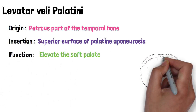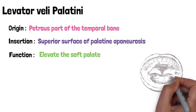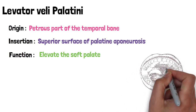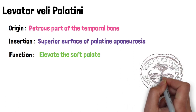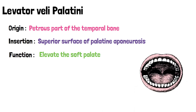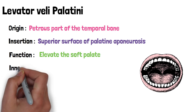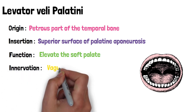Since it is the only muscle that elevates the soft palate, one important clinical feature associated with this muscle is that it can be tested by asking a patient to say 'ah.' If the muscle on each side is functioning normally, the palate elevates evenly in the midline. If one of the muscles on either side is not functioning, the palate deviates away from the abnormal side and towards the functioning side. Levator veli palatini is innervated by the vagus nerve, which is the 10th cranial nerve.